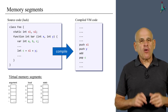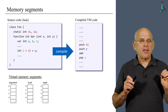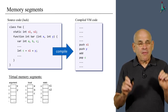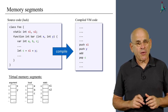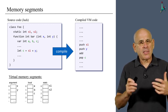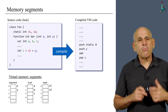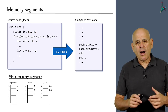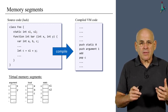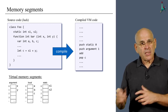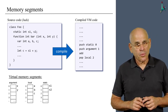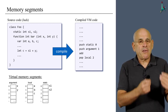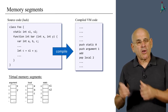Once we have these segments in place, the compiler can map the variables of the high-level program onto these segments. In this particular example, we'll get this particular mapping. And once we have this mapping in place, we can use it to generate code. So instead of 'push s1' — s1 is a static variable — we say 'push static 0'. Instead of pushing y, which is argument number 1, we say 'push argument 1'. And instead of 'pop c', we say 'pop local 2'. Using segments this way, we're able to preserve the raw semantics of these variables also in the VM abstraction.